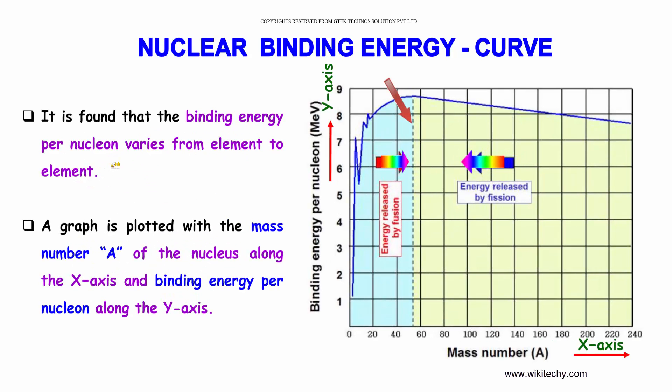It is found that the binding energy per nucleon varies from element to element. A graph is plotted with the mass number of the nucleus along the x-axis and binding energy per nucleon along the y-axis.